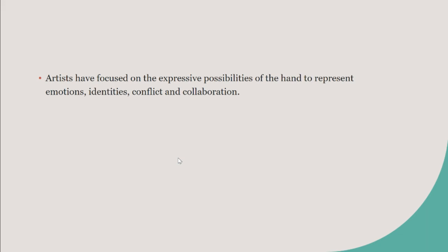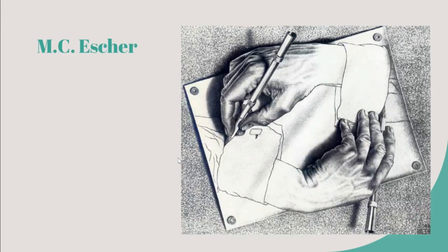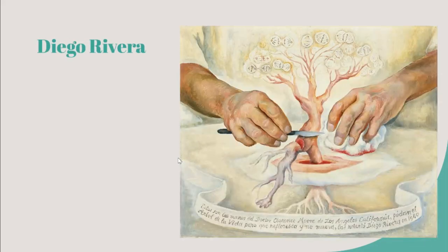Artists can use hands to be really expressive — conveying emotions, identities, conflict, and collaboration. Here's another artist, M.C. Escher — you might have seen some of his work. He did a lot of mathematical art, and here he's exploring how the artist's hands create art — the continuous repeating pattern of art and creation. It's cool how it's half realistic and then half in the stages of becoming.